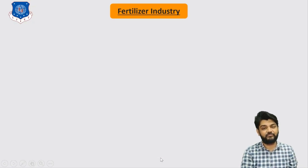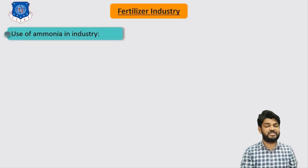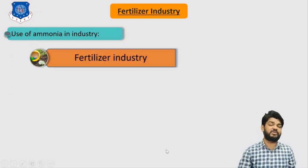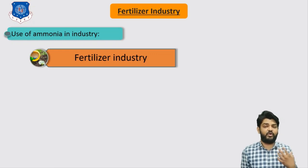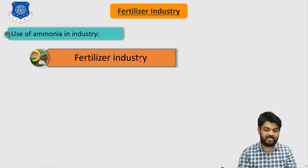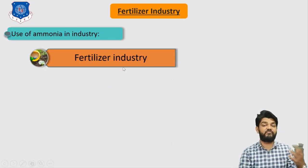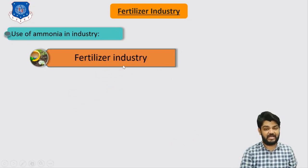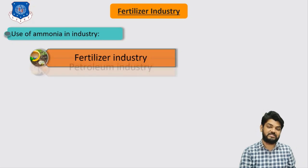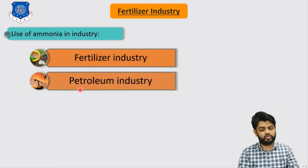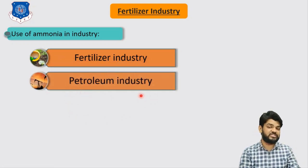Let's discuss what industries use ammonia. Ammonia is largely used — around 90% is consumed in the fertilizer industry to produce different nitrogen-based fertilizers. So almost all ammonia is consumed in fertilizer industries.